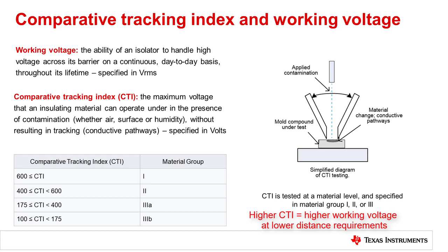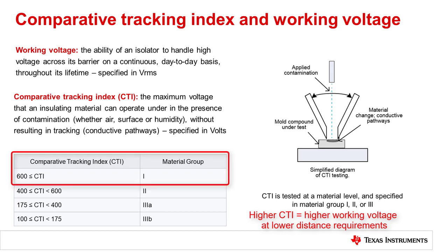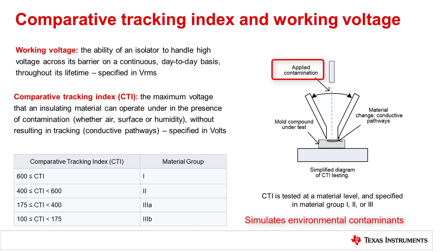A device with higher CTI levels equates to a higher quality material level. Material level 1, for example, is the highest quality material for mold compound. With this in mind, higher CTI found in material group 1 requires smaller creepage and clearance distances than those made with lower CTI or higher material group mold compound. TI isolators use material group 1 and offer the highest quality mold compound. As mentioned earlier, material CTI is tested with applied contamination, which in the test environment simulates environmental risks of surface contamination.